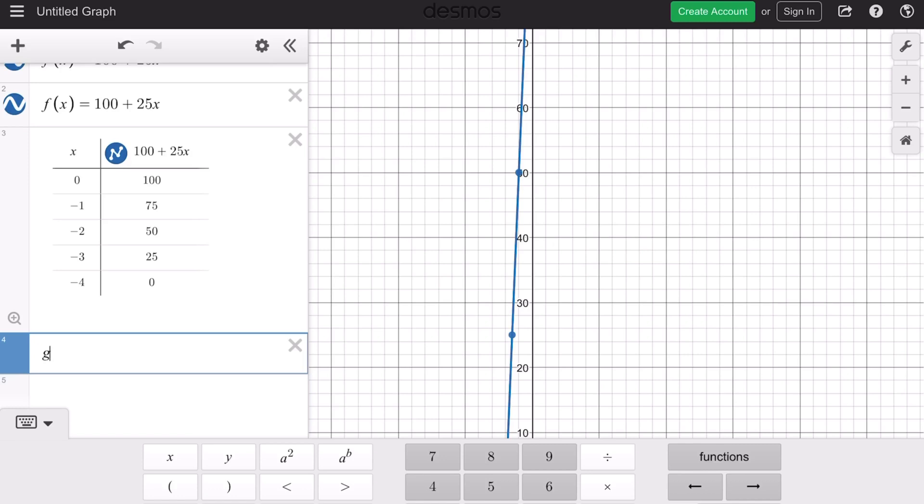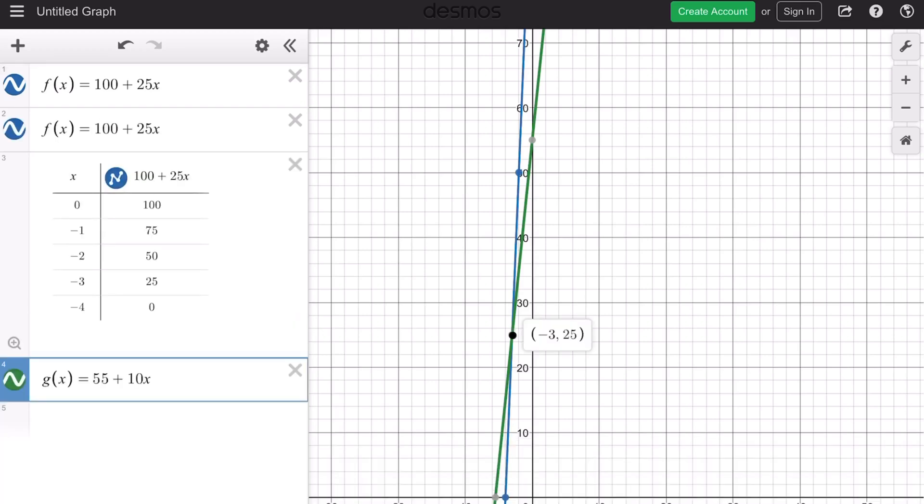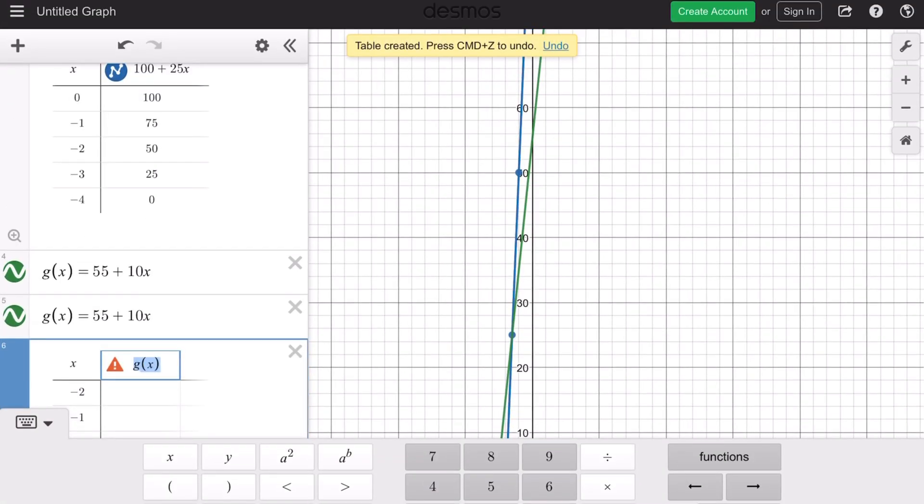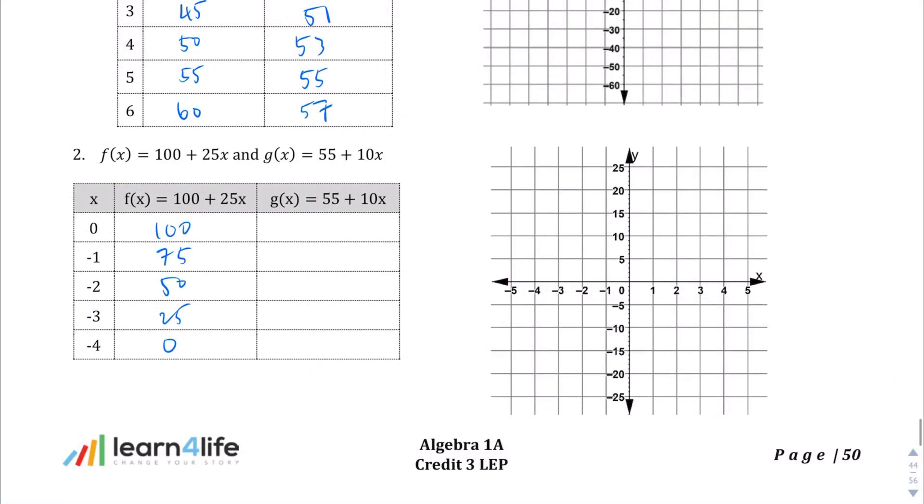And for g(x), let's try it again. G(x) equals 55 plus 10x. Okay. So, our intersection point is right there at negative three comma 25. So let's see. We need the table values. Duplicate, create the table. Instead of g(x), we're going to put 55 plus 10x. Okay. And we want the values zero through negative four. Negative one, negative two, negative three, and negative four. Okay, so we're going from 55 all the way down to 15 in increments of 10 since our slope is 10. So, 55, 45, 35, 25, to 15.